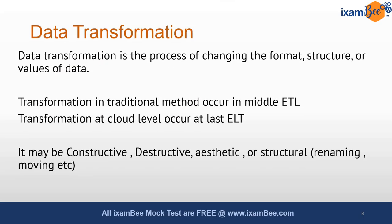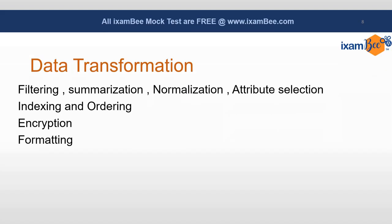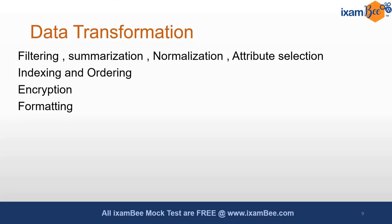Data transformation is the process of changing the format, structure, or values of the data. In the traditional method it occurs basically in the middle, and it can also be done in the cloud. It can be constructive, destructive, aesthetic, or structural. Data transformation techniques include filtering, summarization, normalization, attribute selection, indexing and ordering, encryption, and formatting. These are all steps that are part of data transformation in the data warehouse.